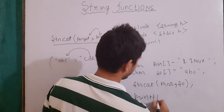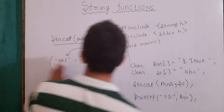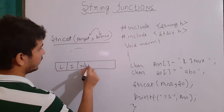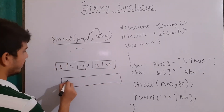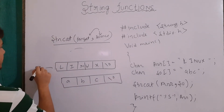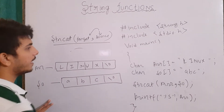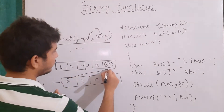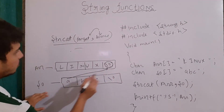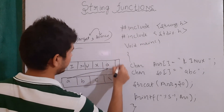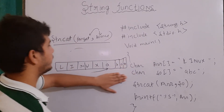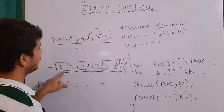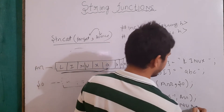Then we do printf("%s", arr). The array has the content "linux\0" and source "so" has "abc\0". The null character at the end of "linux" is removed and the values from source are appended from that location, giving "a", then "b", then "c", then \0. So our output will be "linuxabc".